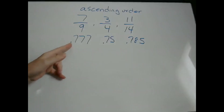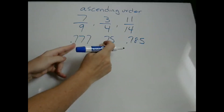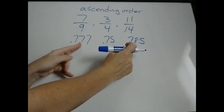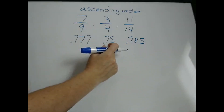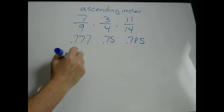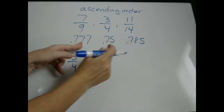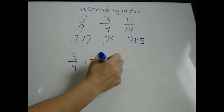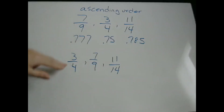When you're comparing decimals, you just first look at the first decimal digit. There's a 7 here and a 7 here, so they're equal as far as the first number goes, so you go to the second number. There's a 7, a 5, and an 8. Well, 5 is the smallest, so 3 fourths is going to be the smallest number. And then you have a 7 and an 8 — 7 is smaller, so 7 ninths is going to be the next smallest. And then 11 fourteenths.